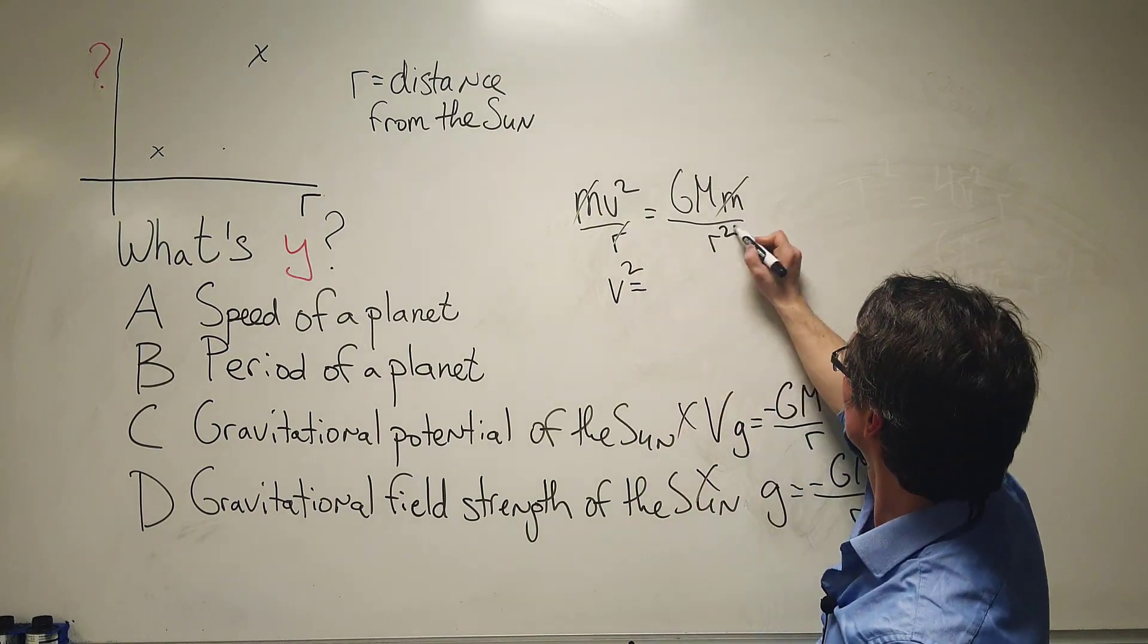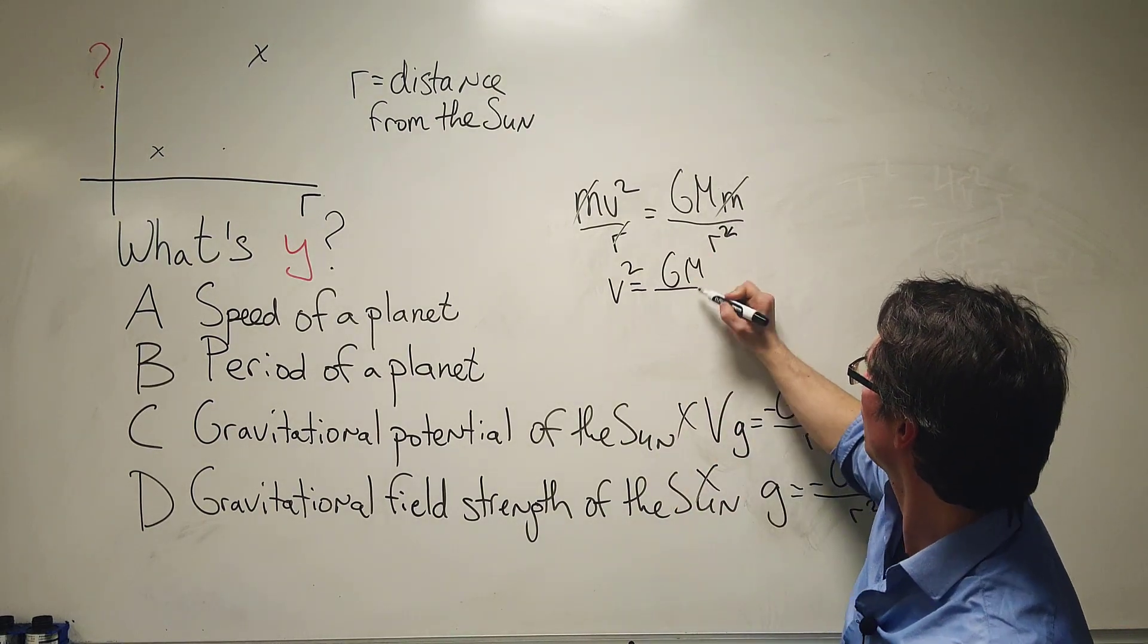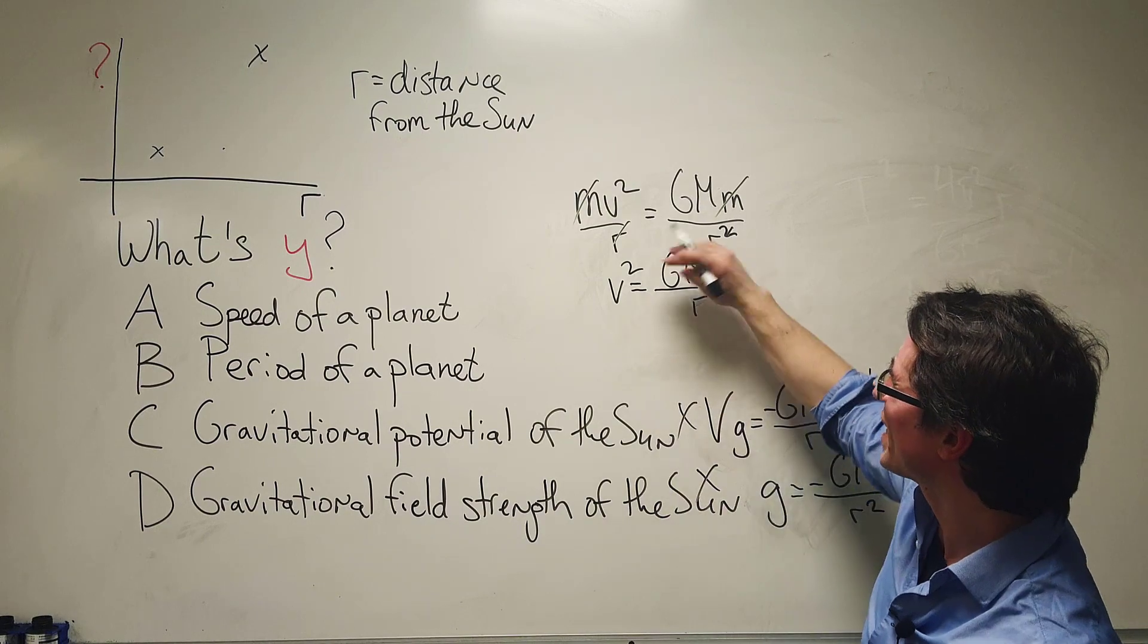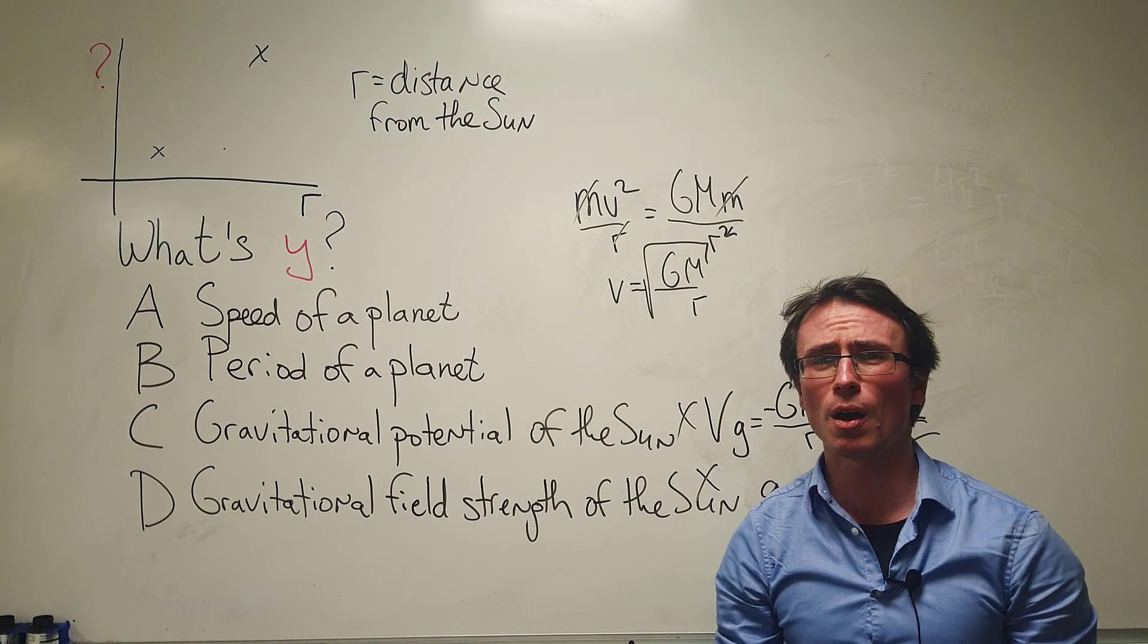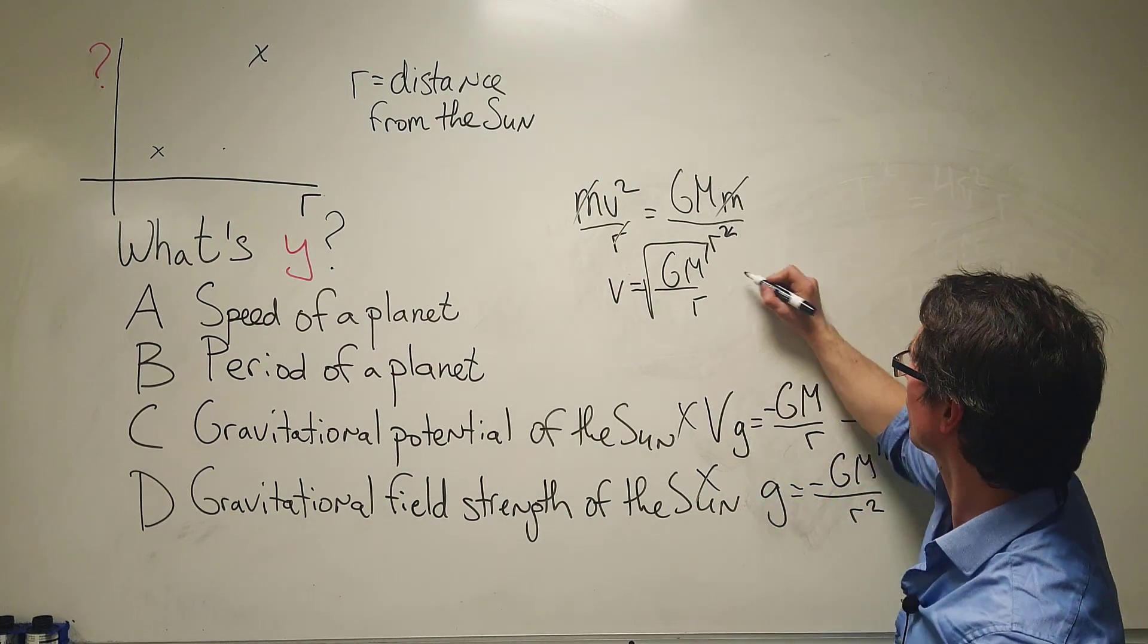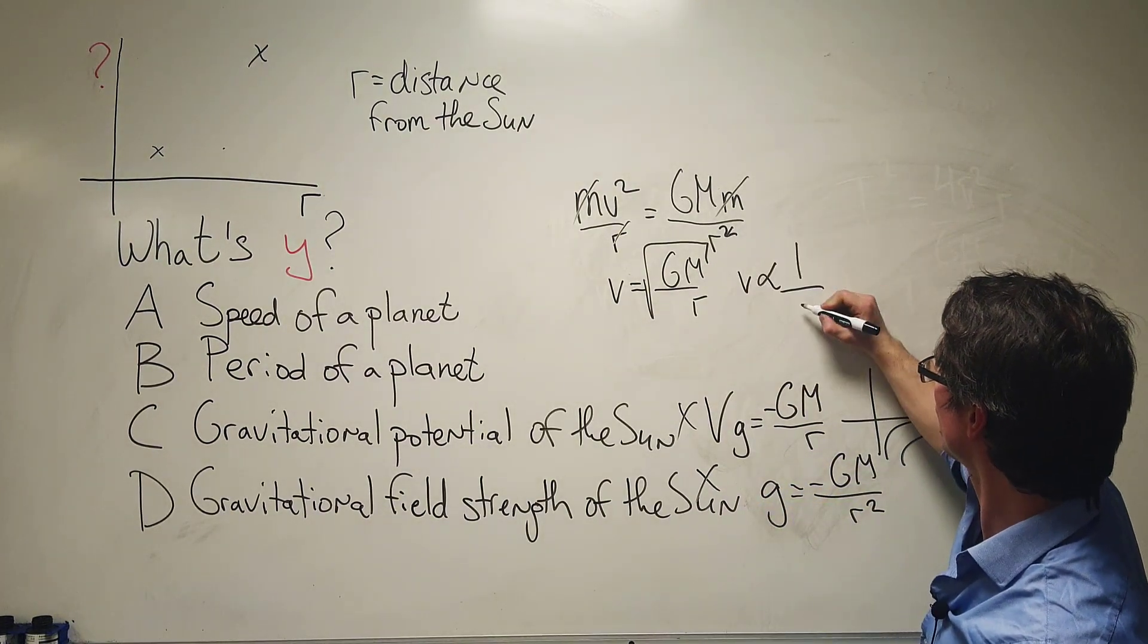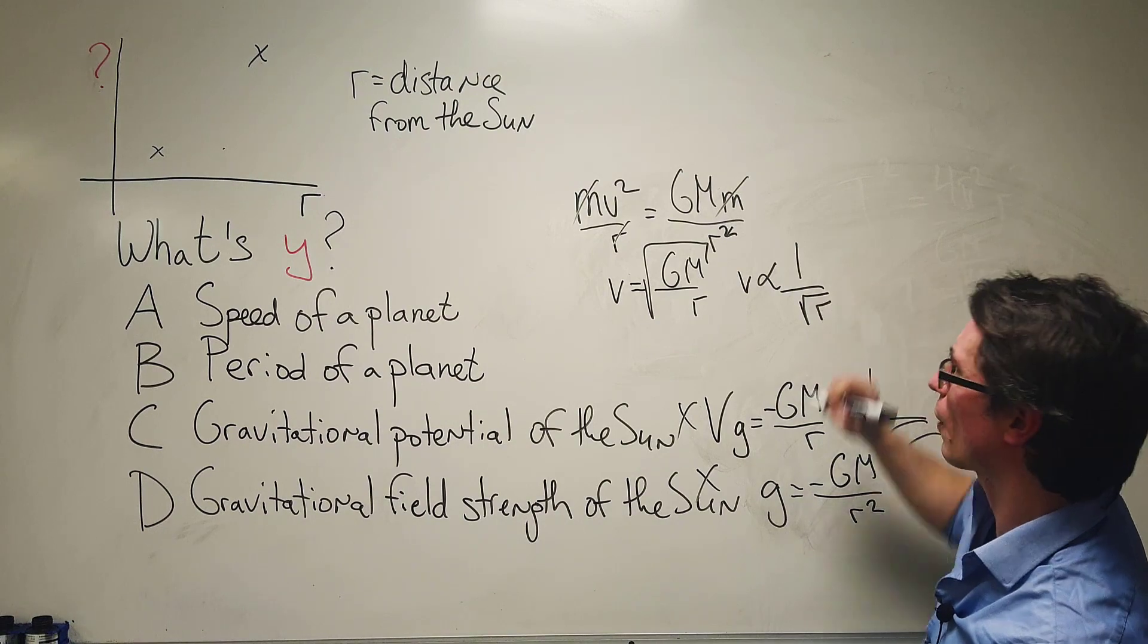We're going to get that v squared will be equal to GM over r, meaning that v will be equal to the square root of GM over r. So v turns out is actually proportional to 1 over the square root of r.